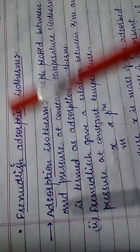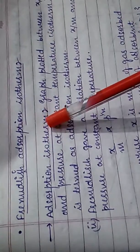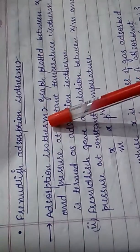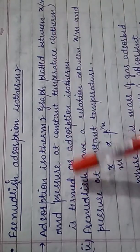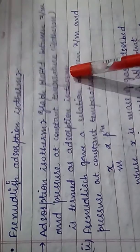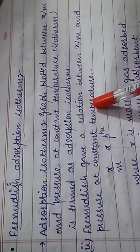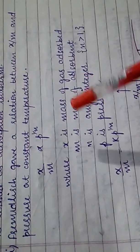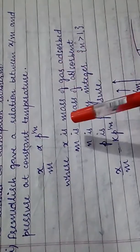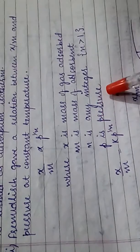Now we come to Freundlich adsorption isotherm. 'Iso' means same and 'therm' means temperature — so same or constant temperature. The graph plotted between x/m and pressure at constant temperature is termed as adsorption isotherm. Freundlich gave a relation: x/m is directly proportional to P^(1/n), where x is the mass of gas adsorbed, m is the mass of adsorbent, n is any integer greater than 1, and P is pressure. So x/m = k·P^(1/n), where k is the proportionality constant.